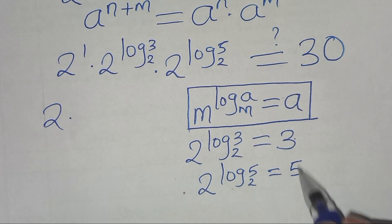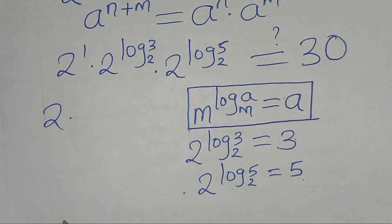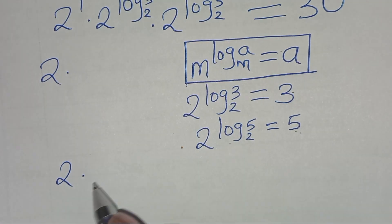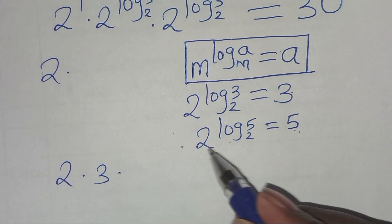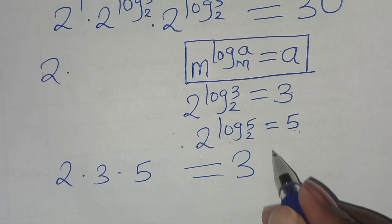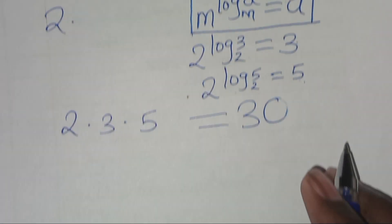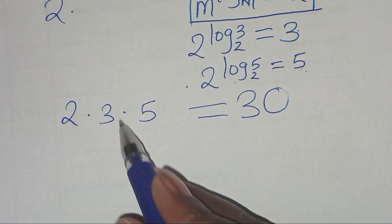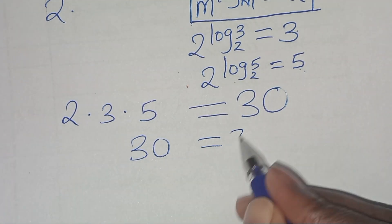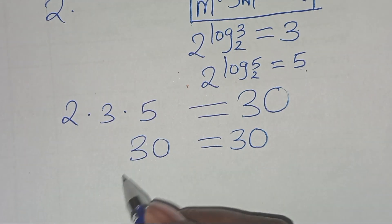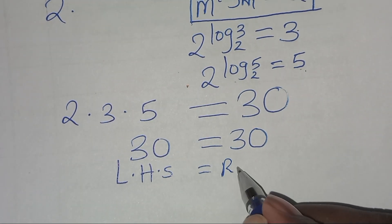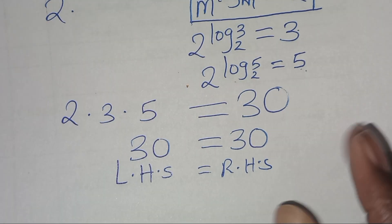Substituting these values, we have 2 times 3, which is 6, times 5, which is 30, and this is equal to 30. So this implies that the left-hand side is equal to the right-hand side.